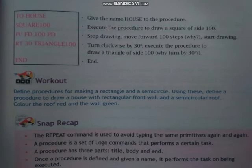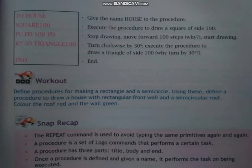The workout is: define procedures for making a rectangle and a semicircle. Using these, define a procedure to draw a house with a rectangular front wall and a semicircular roof. Color the roof red and the wall green. जैसे square and triangle की हमने procedure create की, वैसे ही rectangle and semicircle की create करनी है। आप rough book में try कर सकते हो, otherwise हम lab में perform करेंगे।